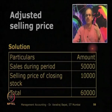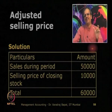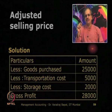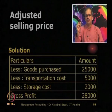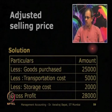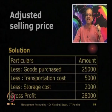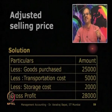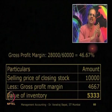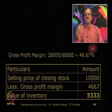Using the margin available, you will estimate the cost. The total amount available for sale is ₹60,000 (sales ₹50,000 plus selling price of closing stock ₹10,000). Out of ₹60,000 we reduce the costs of ₹25,000 + ₹5,000 + ₹2,000 to get a gross profit of ₹28,000. The gross margin is 28,000 ÷ 60,000 = 46%. Since the selling price of closing stock is ₹10,000, we apply the cost ratio and arrive at the cost of inventory as ₹5,333. This is one of the methods of valuation of inventory.